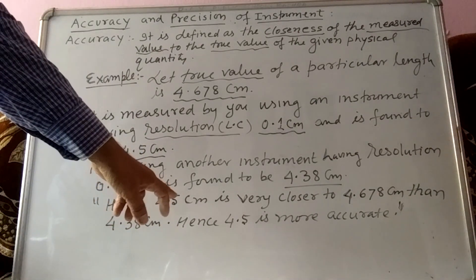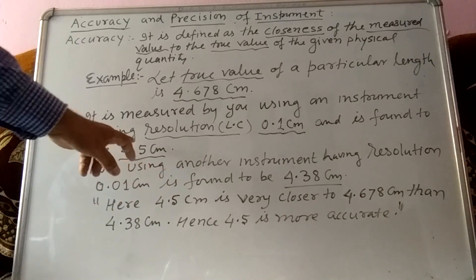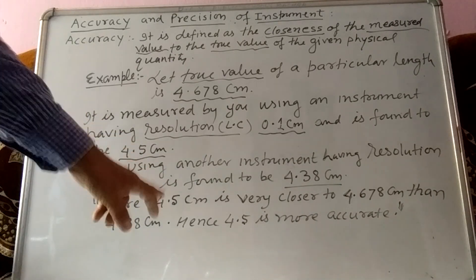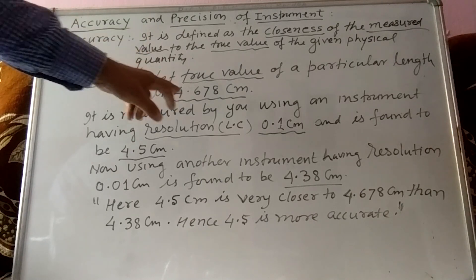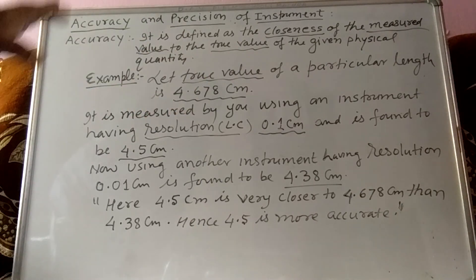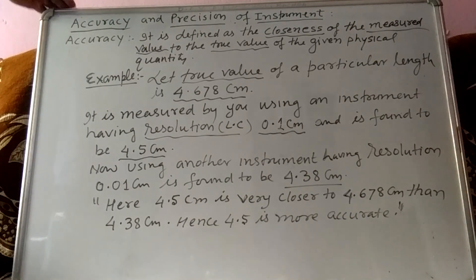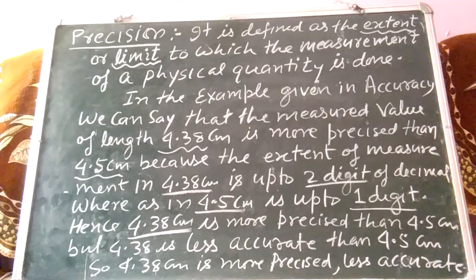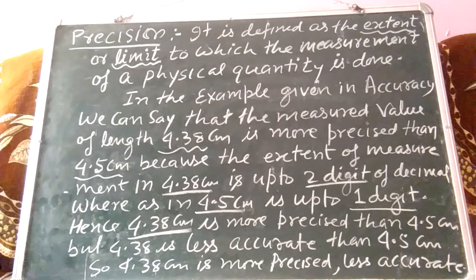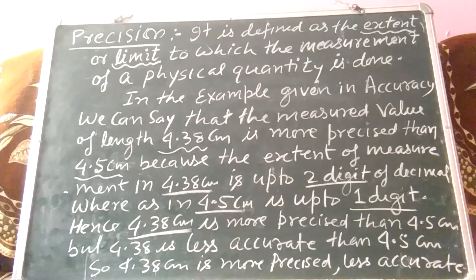So 4.5 centimeter is closer to 4.678 centimeter, hence 4.5 is more accurate. Now coming to the next topic — precision. Precision is defined as the extent or limit to which the measurement of a physical quantity is done, meaning up to what extent you are measuring the physical quantity.